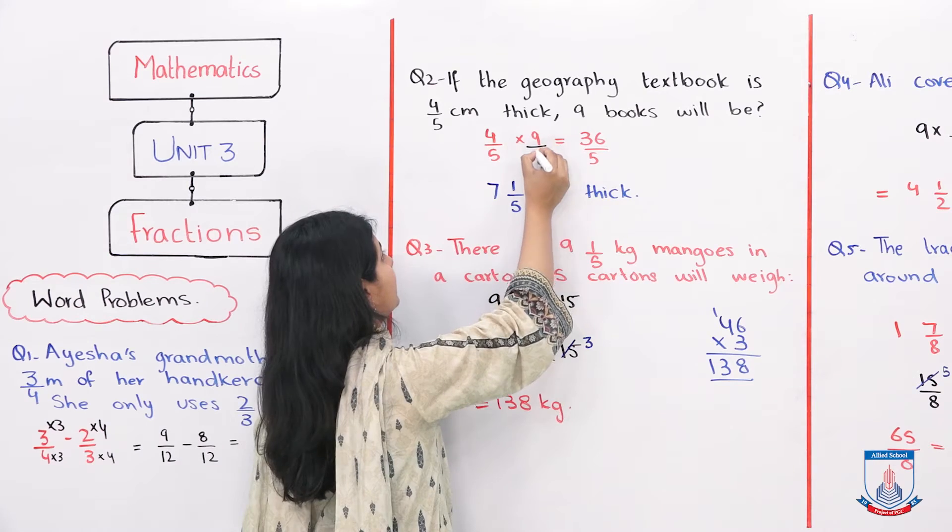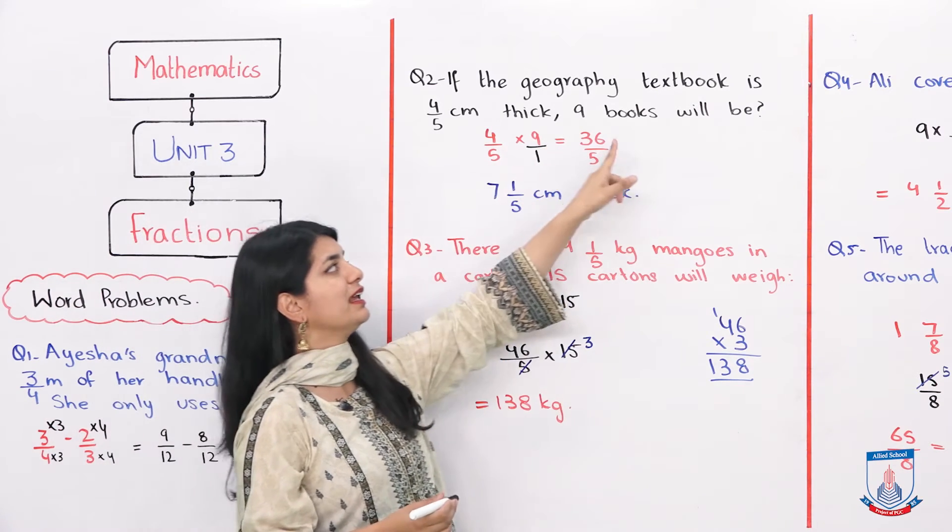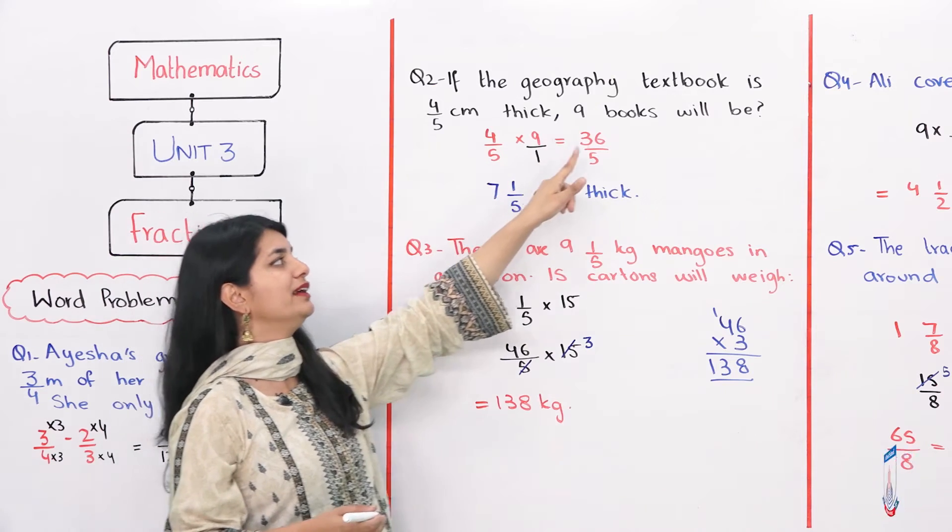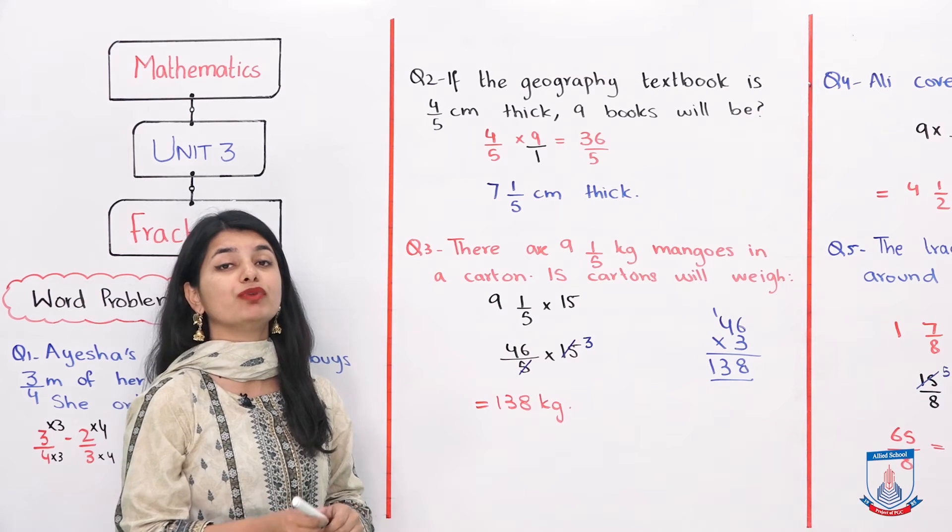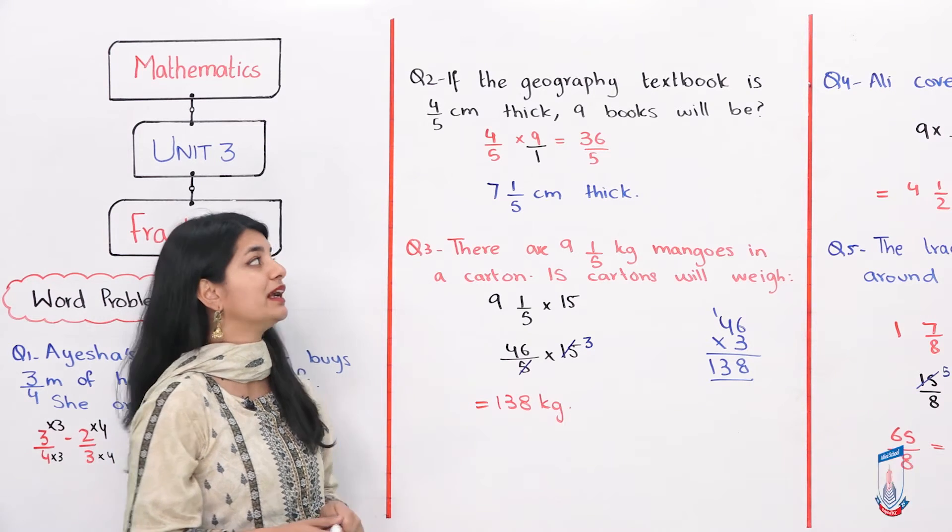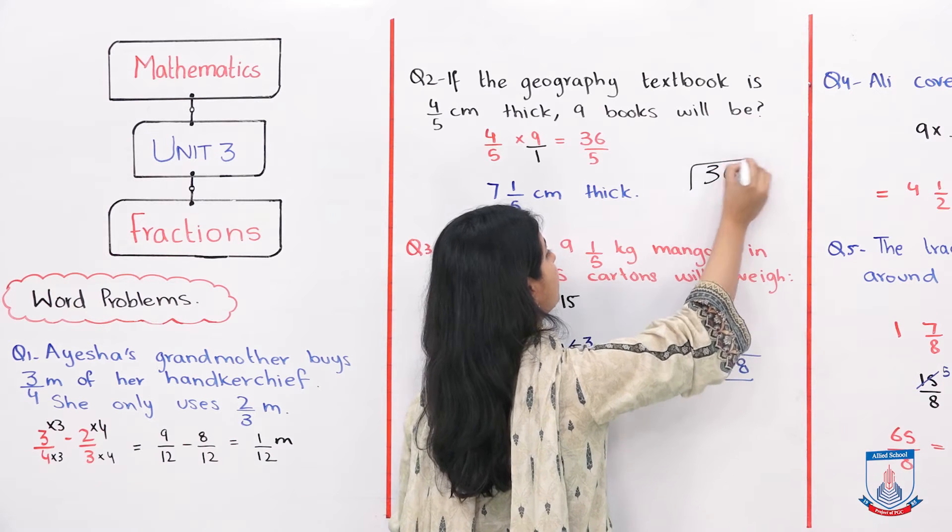When we multiply 4 by 5 by 9, we write 9 as 9 over 1. Now we will do 4 into 9, which is 36. 5 into 1 is 5. So 36 by 5 is our answer. Because it is an improper fraction, what will we do? We can divide it. 36 divided by 5.